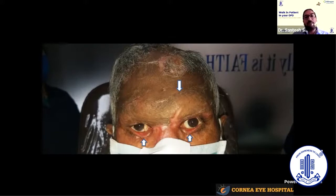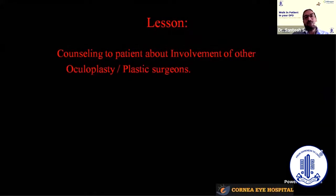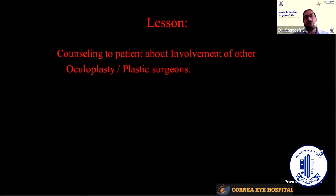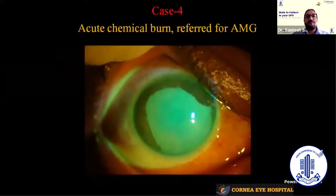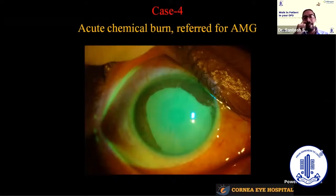He still has to undergo multiple surgeries because of contracture on the lower lid causing ectropion. The upper lid is also totally adhered to the brow area and he is unable to completely close his eyes. The lesson is to counsel the patient about involvement of oculoplasty and plastic surgeons, and we should have good rapport with our plastic surgery colleagues so these patients can be handled well.